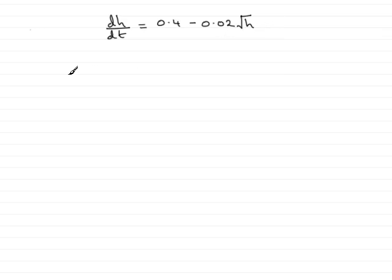So by dividing both sides first of all by 0.4 minus 0.02 root h, and rearranging this by removing the dt, what we have is that the integral of 1 over 0.4 minus 0.02 root h, dh.